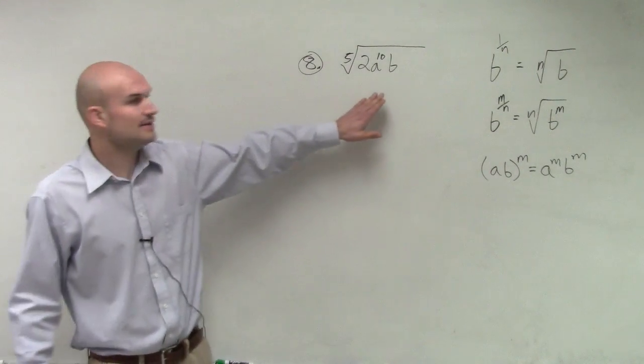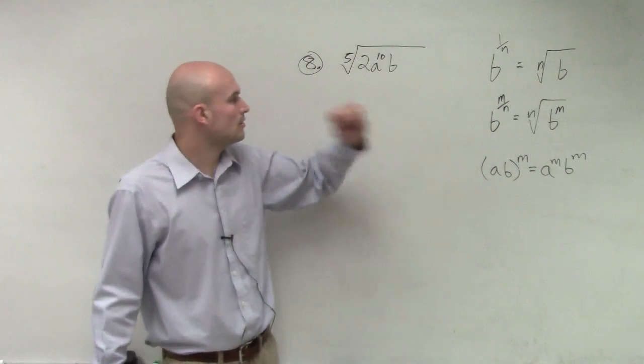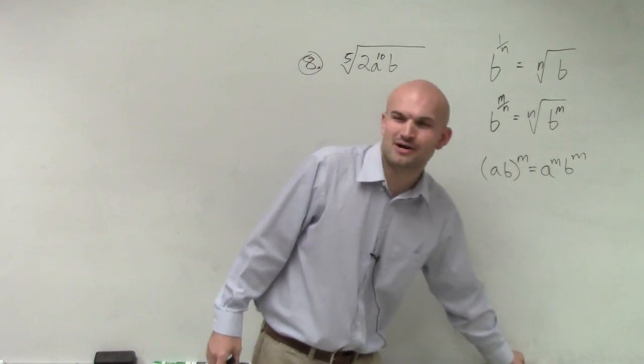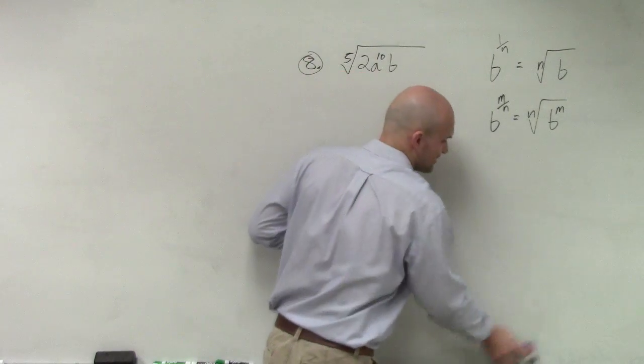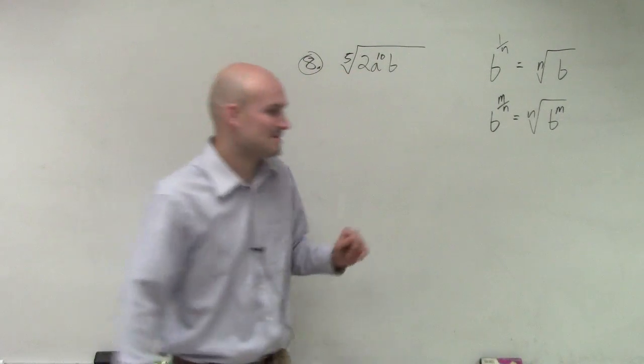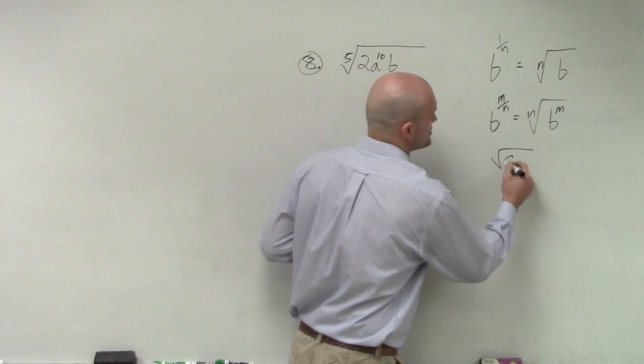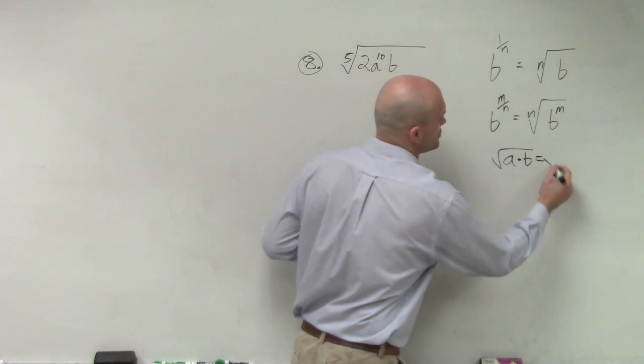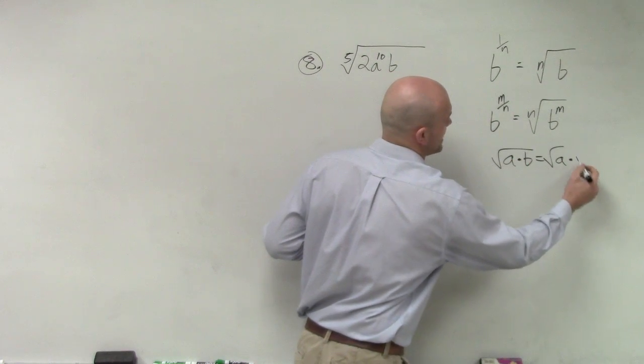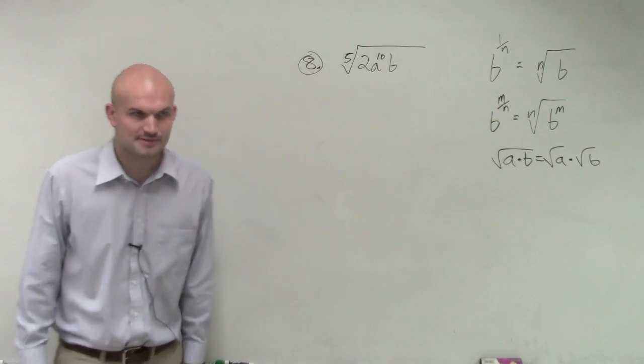So the first property is let's apply - oh, I'm sorry, that's the power to the product rule. We're not dealing with the power to the product rule. We're actually going to be dealing with the product rule of radicals. My apologies. The square root of a times b is equal to the root of a times the root of b. That's the rule we're going to use.